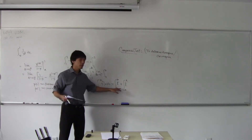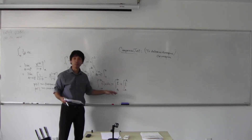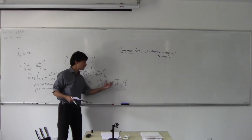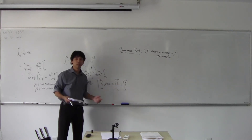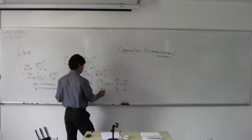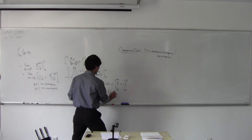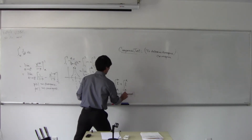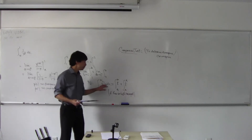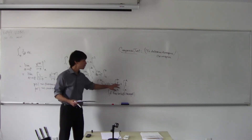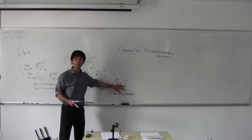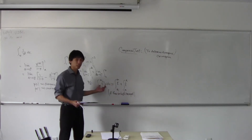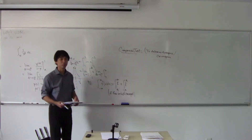So you just break it up into two integrals and you check the convergence of both of those. If they converge to some numbers, then you say this is the sum of those numbers. If both are convergent, then the integral over the whole real line is the sum of these integrals over half of the real line. If either is divergent, we say this thing is divergent. It's all pretty natural.